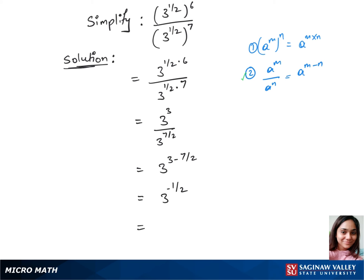We can write this as 1 over root 3, and we will rationalize this to 1 over root 3 times root 3 over root 3. This gives us root 3 over 3. That's our final answer.